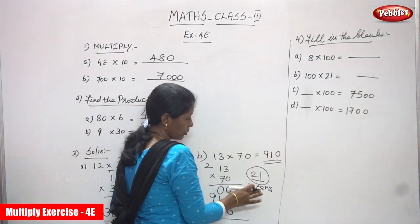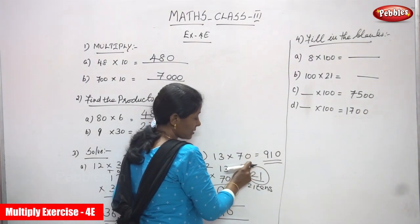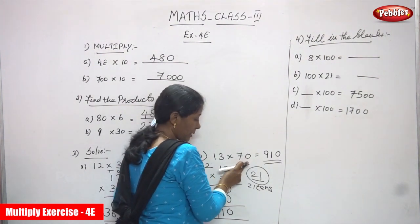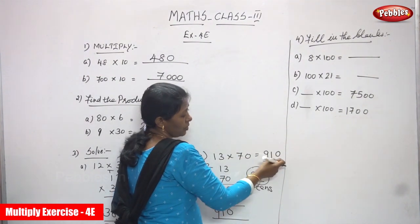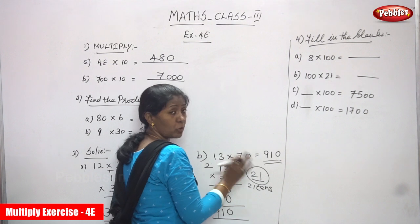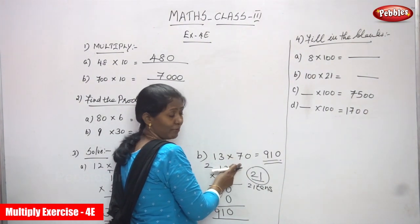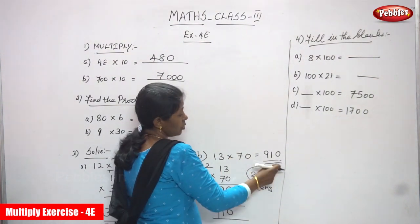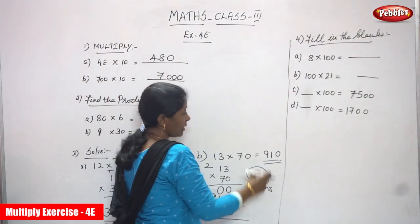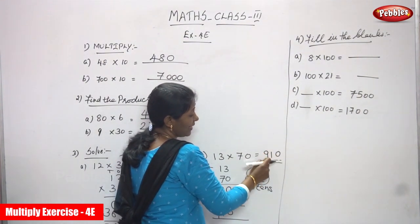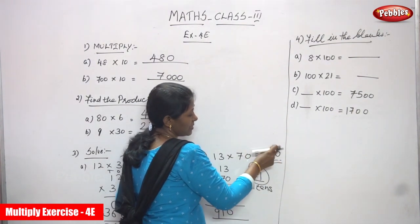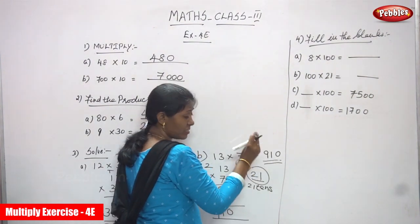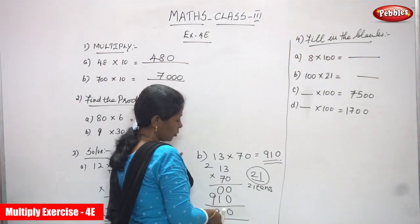So for 13 into 70 using rule one: see how many zeros are in 70 — only one zero. Write the zero at the end, then multiply the remaining numbers. 13 into 7 using the seventh table gives 91. So the answer is 910. That is 910.